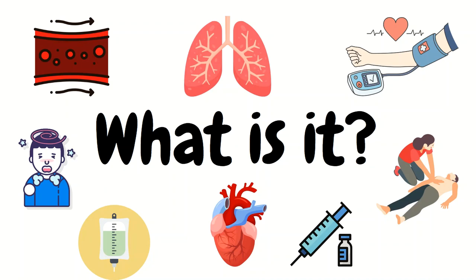Epinephrine is a catecholamine that acts on adrenergic receptors, including alpha-1, beta-1, and beta-2, leading to an increase in blood pressure, heart contractility, and increases in heart rate, as well as bronchodilatory effects. It's a potent medication with several uses, so we as ER nurses must educate ourselves to keep our patients safe.